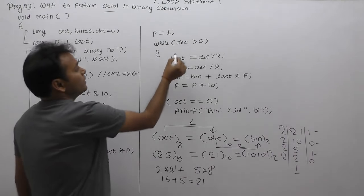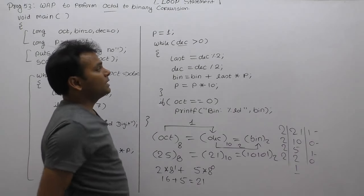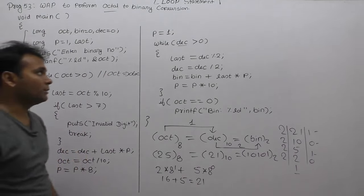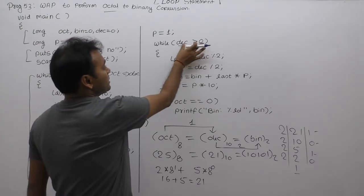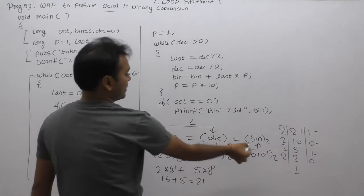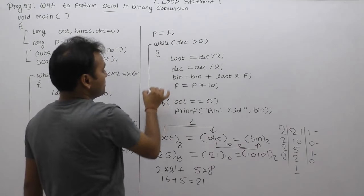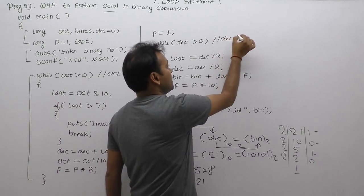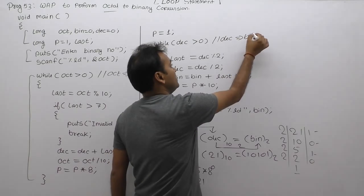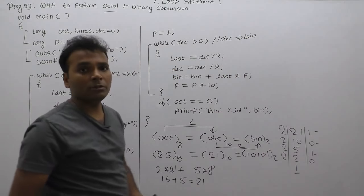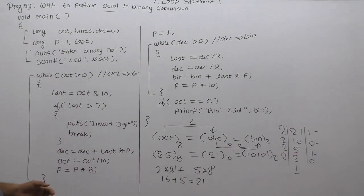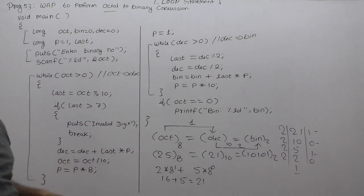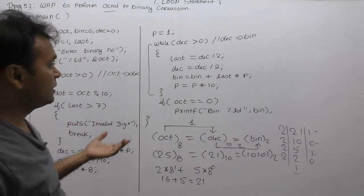Next one, decimal conversion complete, control exits the loop, then perform decimal to binary. Decimal already in previous loop calculated. Next one, decimal convert to binary. Second loop through decimal to binary conversion.